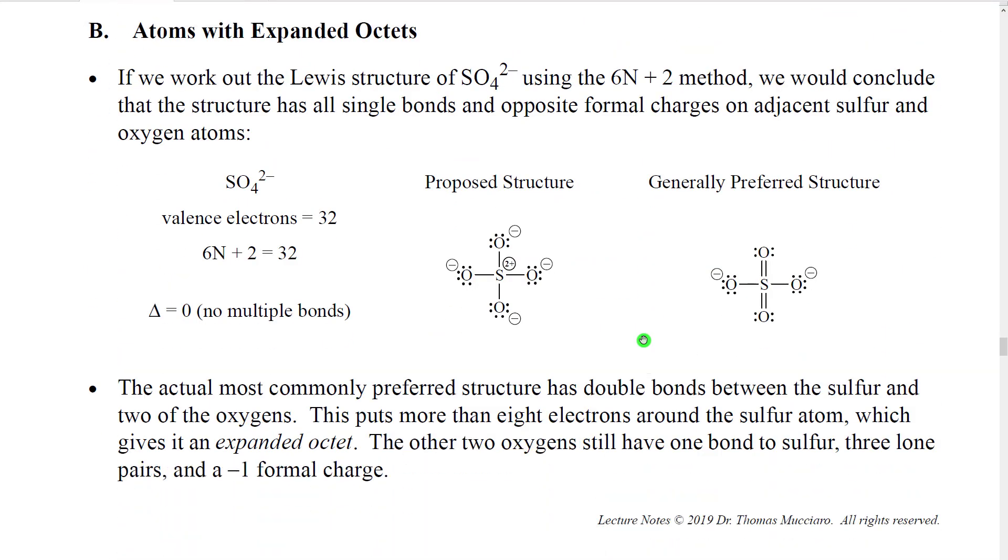Next, we have atoms with expanded octets. Again, I'm going to start by working out an example here to show you why we might do this, how we could find this. So what I want to do is I want to do the Lewis structure of this ion, SO4 2-. So SO4 2- has a total of 32 valence electrons. It turns out when we calculate 6n plus 2, we also get 32. So this says that we should be able to get a structure with no multiple bonds.